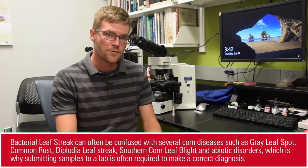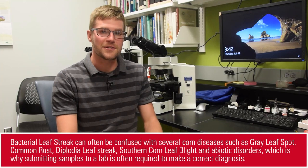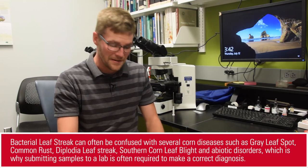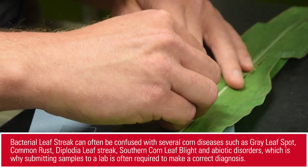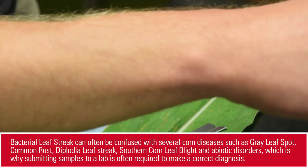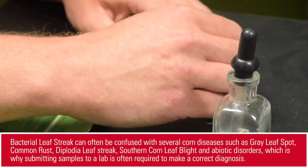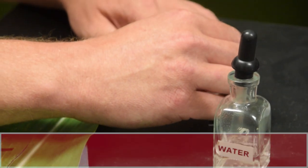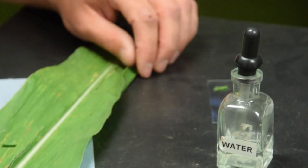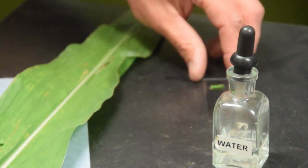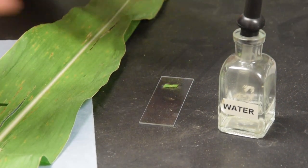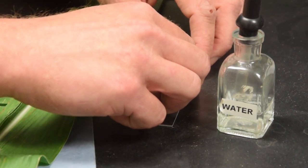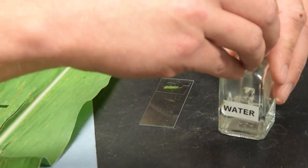Now I'm here in the microscope room in the clinic and I'm going to cut a lesion to check for bacterial streaming. When I cut a lesion, I want to put a drop of water on my microscope slide and place the piece of the lesion that I cut into the water. What's going to happen is the bacteria should flow from the cells of the lesion into that water — that's what we call bacterial streaming.